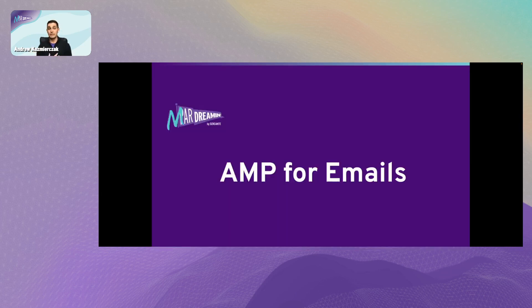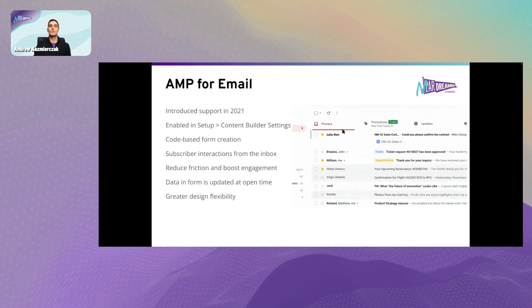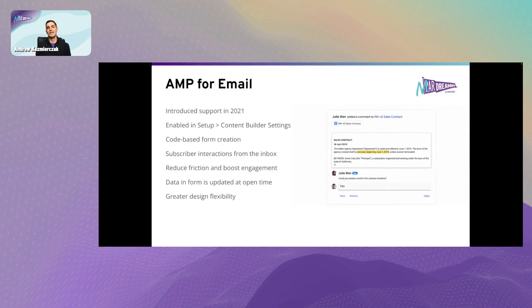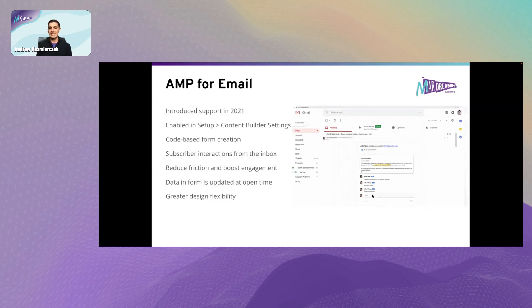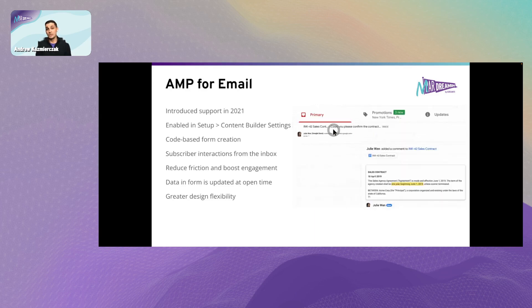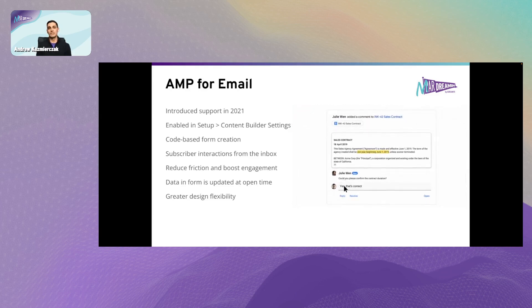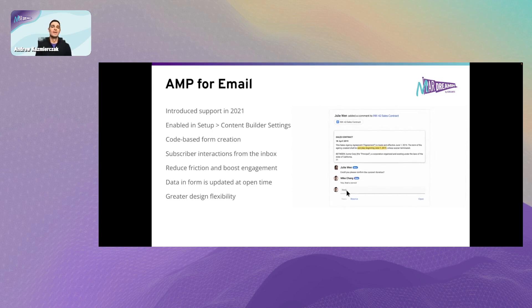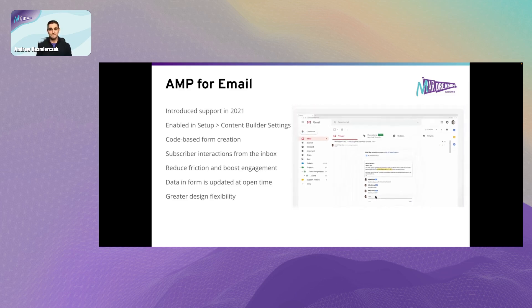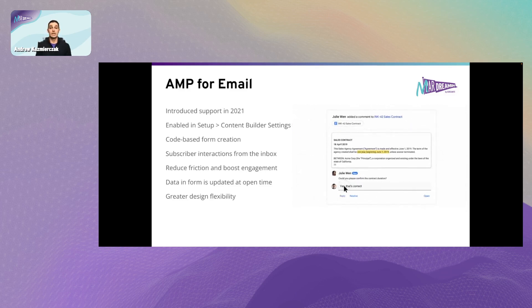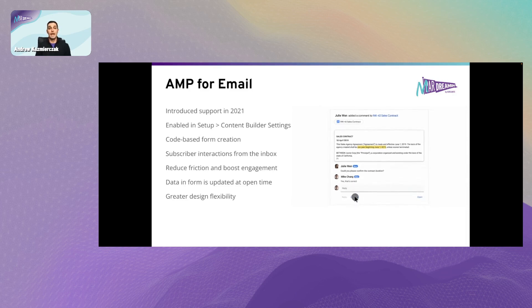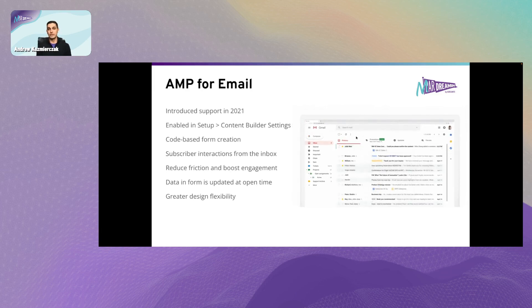Now we're going to shift gears and talk about AMP. To clear up any confusion from the jump: AMP is not the same as AMPscript. AMPscript is Marketing Cloud's proprietary scripting language, whereas AMP is a Google coding language. We introduced support for AMP in 2021, and just like Interactive Email Forms, it can be enabled in Content Builder Settings. The biggest difference is that Interactive Email Forms are no-code, whereas AMP is all code-based — but there's solid documentation with code samples to help you get started.